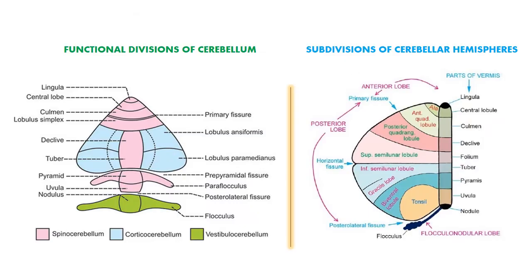Now looking at the subdivisions and functional divisions of the cerebellum — previously we saw the anatomical divisions; here we see the functional or physiological divisions. The vermis contains the lingula, central lobule, culmen, declive, folium, tuber, pyramid, uvula, and nodule. There are also subdivisions of the cerebellar hemispheres at each of the anterior, posterior, and flocculonodular lobes.